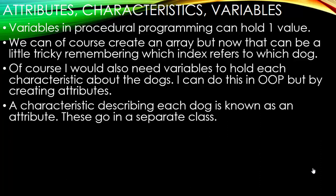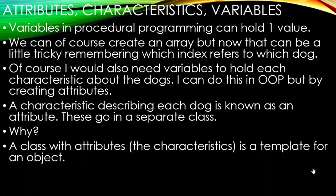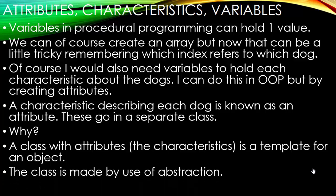A characteristic describing each dog is known as an attribute, and these attributes go into a separate class. Well, why would I even need to put them in a different class? Well, a class with attributes, the characteristics describing the object, it's a template for an object. The class is made by use of abstraction. Well, what in the world is that?